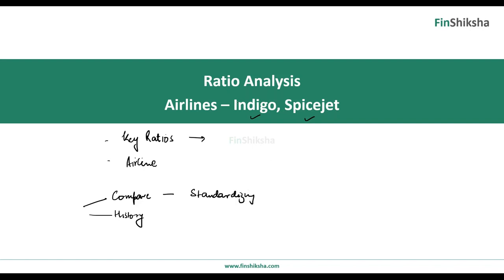Ratios also make comparison possible by standardizing data. Take IndiGo and SpiceJet — clearly IndiGo is bigger than SpiceJet. When comparing on pure numbers like profits or revenues, IndiGo will always be bigger. So we're trying to ascertain whether we can compare them on certain metrics by standardizing the data across the two firms. There are a variety of ratios that talk about the financial health of a company, and we'll use a specific set of ratios and calculate them as we go along.